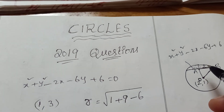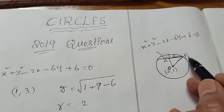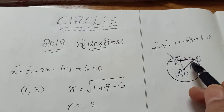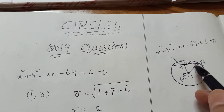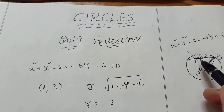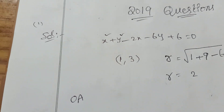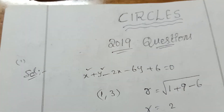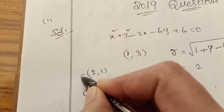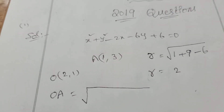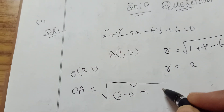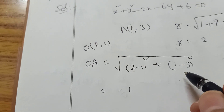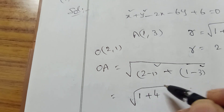The radius is 2, and the center is (1, 3). Now we need to find OA — the distance between O (2,1) and A (1,3). Using the distance formula: OA = √((2−1)² + (1−3)²) = √(1 + 4) = √5.